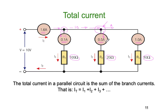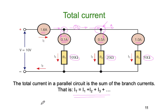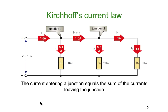At the first node, we have 1.6 amps entering. Then 0.1 amps exits to the first branch and 1.5 amps continues. At the next node, 1.5 amps comes in, 0.5 amps goes down through the second branch, and 1 amp continues through to the third branch. Kirchhoff's current law says the current into a node has to equal the sum of the currents out of the node. Expressed mathematically: I_total = I1 + I2 + I3 + etc.